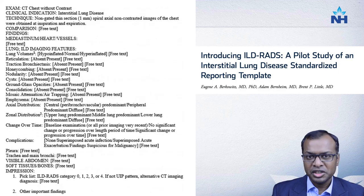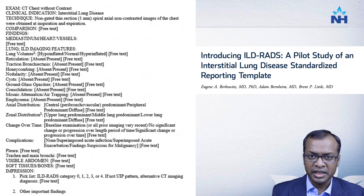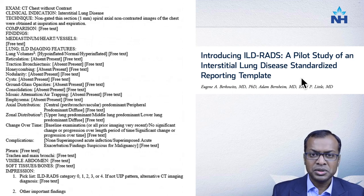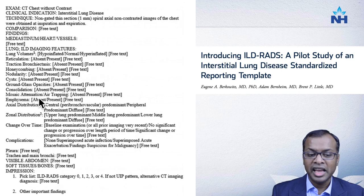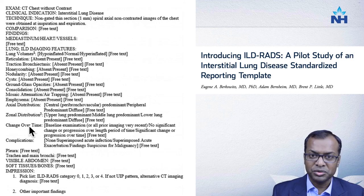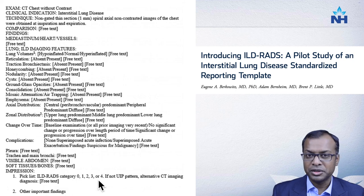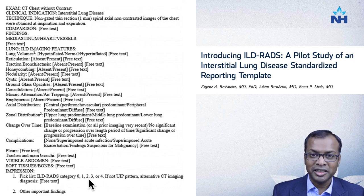The quality of HRCT reporting is variable across different centers and countries. This has led to suggestions for standardized reporting templates covering all possible features — where reporters simply indicate yes or no — along with axial and zonal distribution, disease progression, and a final ILD-RADS score from 0 to 4: ILD-RADS 1 is typical UIP, 2 is probable UIP, 3 is indeterminate for UIP, and 4 is alternative diagnosis or inconsistent with UIP.